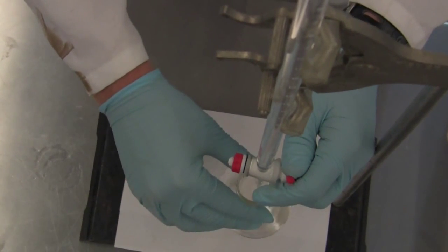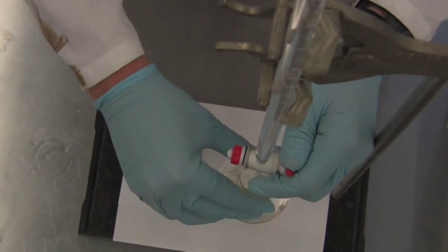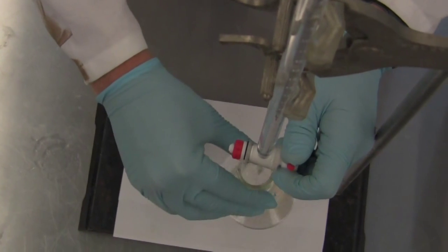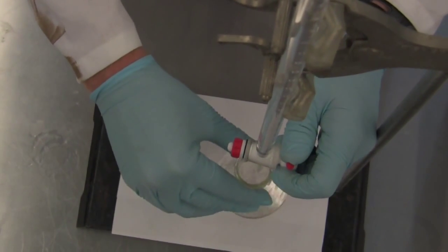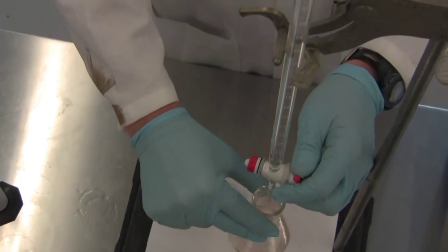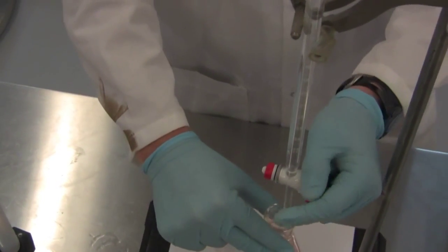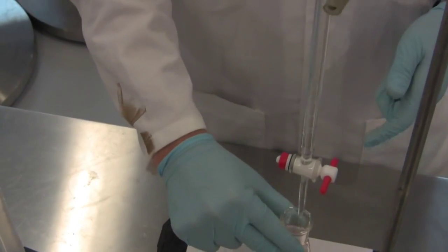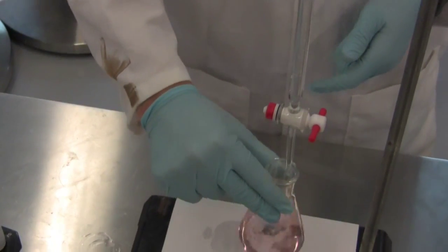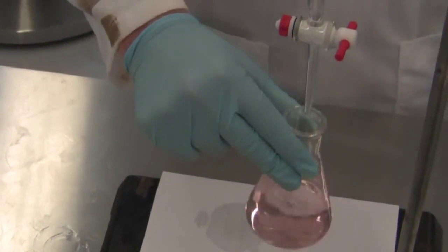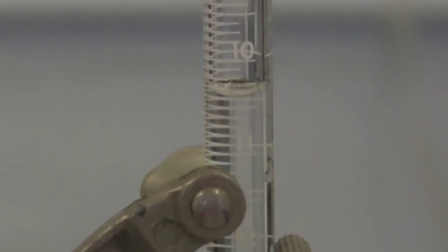It's okay to go a little bit faster at first, but as you get closer to where you think your endpoint's going to be, you'll have to slow down your titration. And there we have it, a nice light peach endpoint. Now we need to record our final volume, which is 10.45.